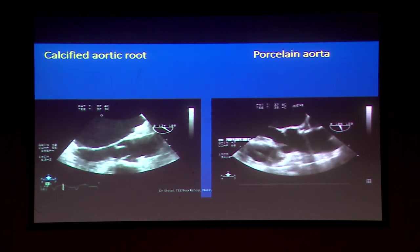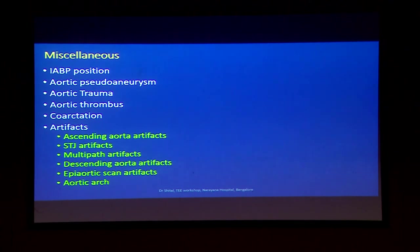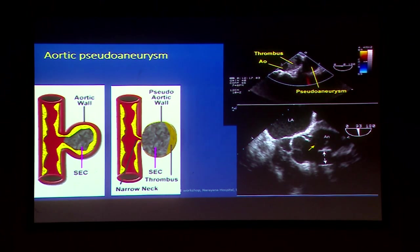Some miscellaneous uses for aorta assessment: IABP position, pseudoaneurysms, trauma, thrombus, coarctations, and artifacts. A pseudoaneurysm can occur at any position after rupture. The wall of the sac is not the true wall — it is an aneurysm communicating with the lumen, with a narrow neck or duct, and may be filled with plenty of debris.